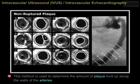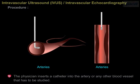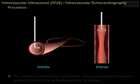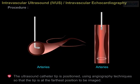This method is used to determine the amount of plaque built up along the valves of the arteries. Procedure: The physician inserts a catheter into the artery or any other blood vessel that has to be studied. The ultrasound catheter tip is positioned using angiography techniques so that the tip is at the farthest position to be imaged.